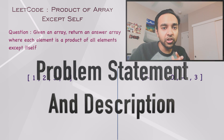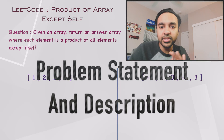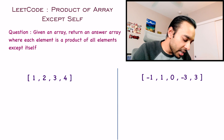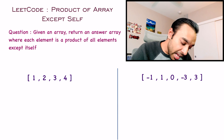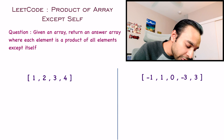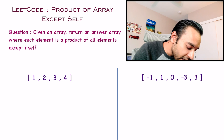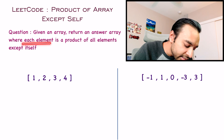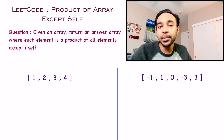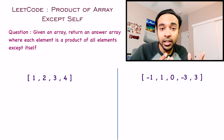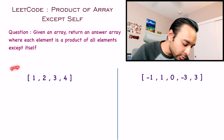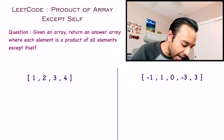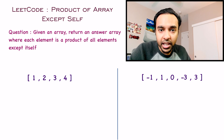Let us make sure that we are understanding the problem statement correctly. You are given an array of integers and you have to return an answer array where each element is a product of all the elements except itself. We will see the most obvious way to solve this problem and why there is a problem with it — why you are getting that wrong answer.